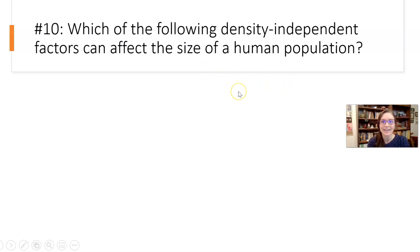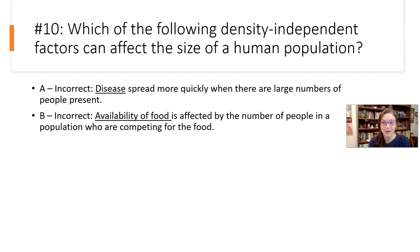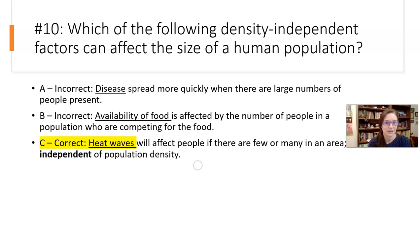Question number 10: which of the following density-independent factors can affect the size of a human population? Density-dependent factors are things altered by whether there are more people or not. Disease — if there are more people, disease spreads more quickly; we have easier access, contact, and sharing of the vectors that cause disease. Availability of food — we are competing for resources, more of us competing for the same resources. That's very much density-dependent.